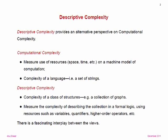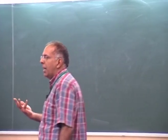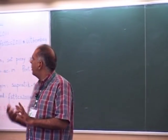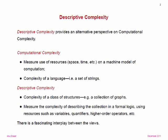We are talking about descriptive complexity. Descriptive complexity provides an alternative way of looking at computational complexity. Classically, computational complexity is about measuring the use of resources such as space, time, and so on, on some machine model of computation, and we define it in terms of the complexity of a language — a set of strings — which is our classical notion of a decision problem.